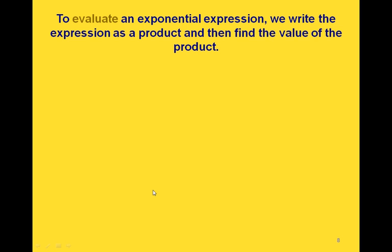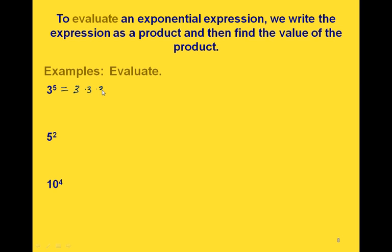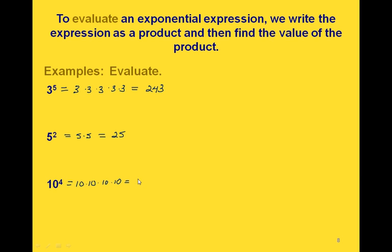When evaluating an exponential expression, we write the expression as a product first and then find the value. For example, three to the fifth means five factors of three: three times three times three times three times three, which equals 243. Five squared means two factors of five: five times five equals 25. Ten to the fourth means four factors of ten, giving us four zeros, which equals 10,000.